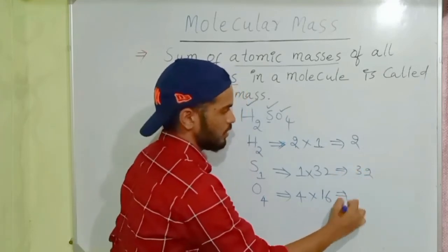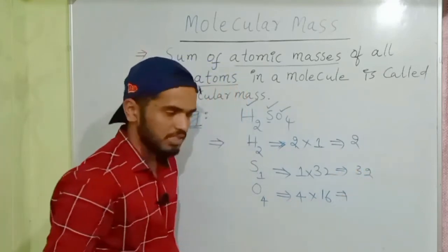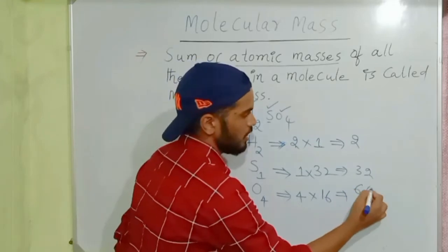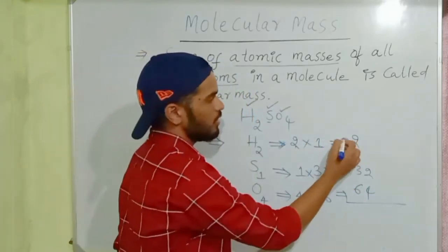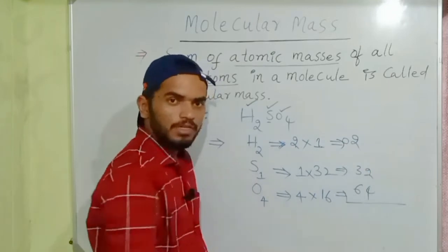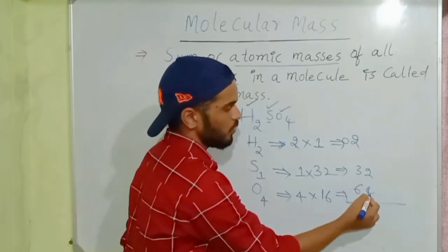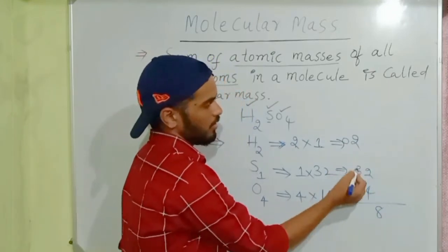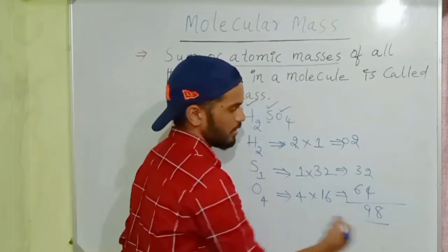And 4 into 16 is 64. Finally you can add the values here: 2 plus 32 plus 64. How much? 4 plus 4 is 8, 3 plus 6 is 9. 98 you will get.